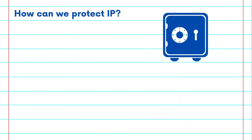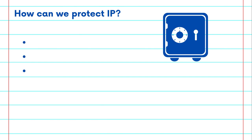Protecting IP is vital. Just as you lock valuables in a vault, you safeguard your data science creations. Encryption, access controls, and legal agreements like patents, copyrights, and trademarks help keep your IP safe.